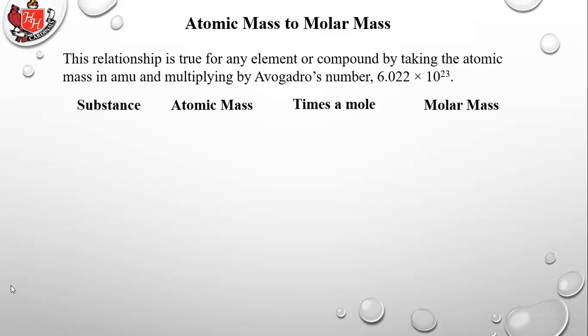Let's look at a comparison for several substances. Carbon, from the periodic table, has an atomic mass of 12.01 amu. Multiply that by a mole and you get 12.01 grams — the numbers match. That means if you have 12.01 grams of carbon, you have exactly 6.022 × 10²³ atoms of carbon. If you have 24.02 grams — twice as much — you have two times 6.022 × 10²³ atoms.